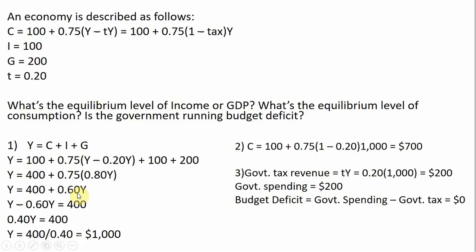Then we're going to subtract 0.6Y from both sides. On the left-hand side we now have Y minus 0.6Y, which simplifies to 0.4Y. Dividing through by 0.4, we have 1,000. 1,000 represents the equilibrium level of income.